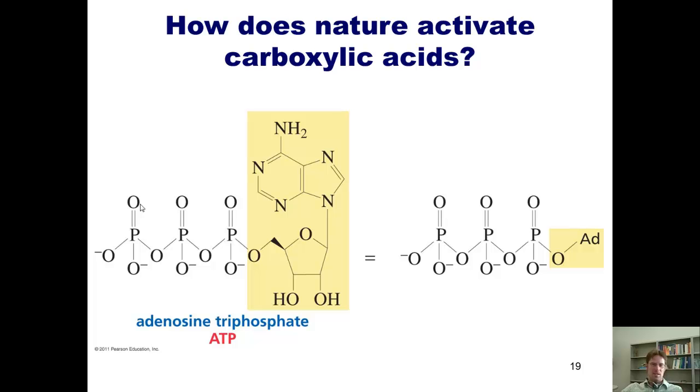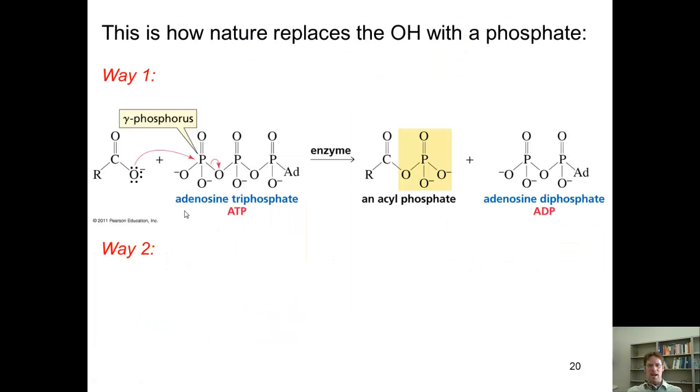One question you might ask, then, is what in the world does nature do with these phosphate groups? Well, it likes to sequester ATP in various sites inside cells and other tissues. And then, when a carboxylic acid needs to be activated,